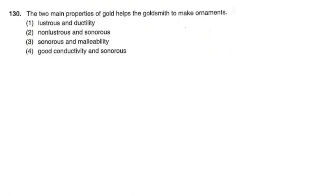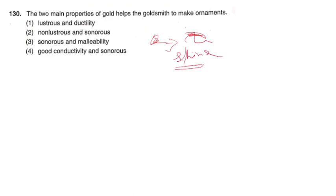Next question: The main two properties of gold that help the goldsmith make ornaments. Options: lustrous and ductility; non-lustrous and sonorous; sonorous and malleability; good conductivity and sonorous. Gold is ductile and lustrous (shiny). The correct option is option 1: lustrous and ductility.